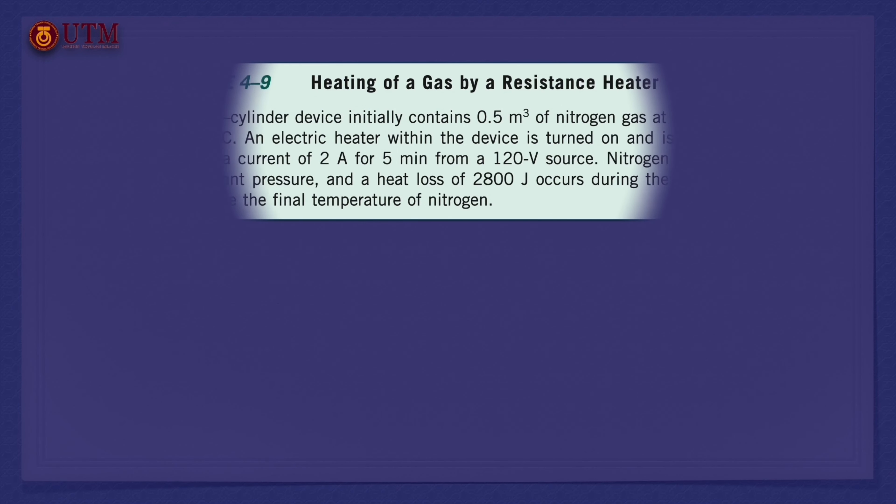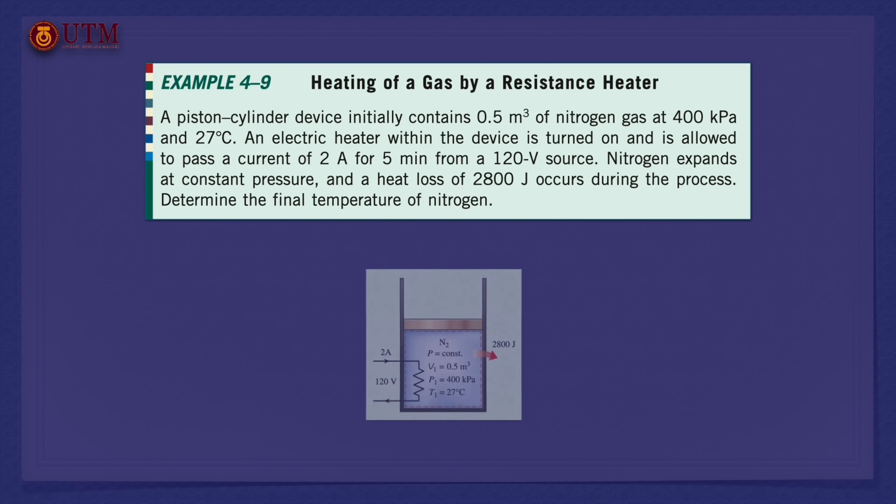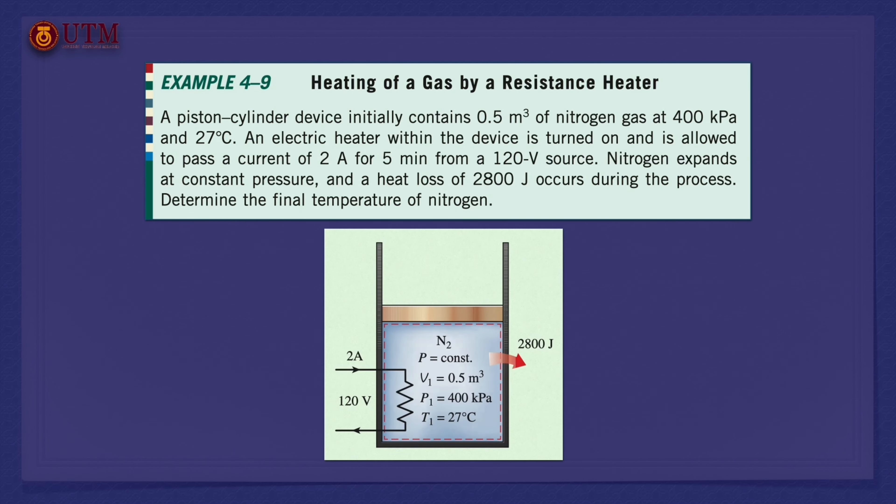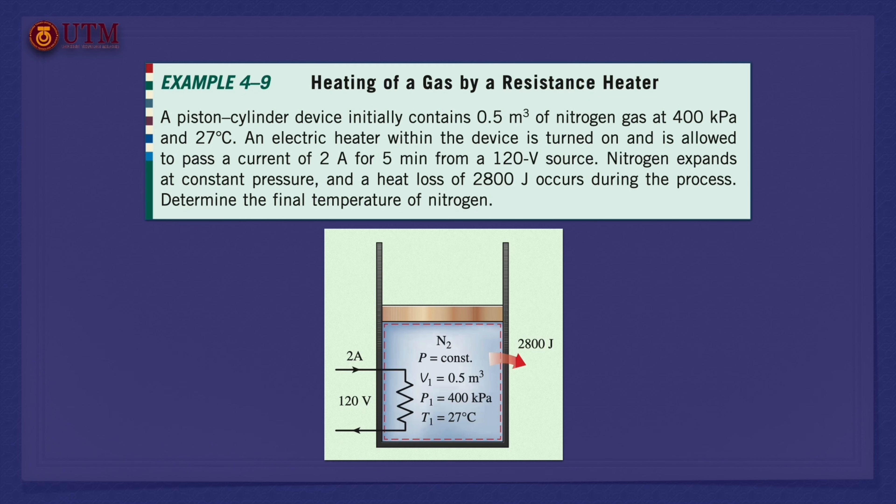Now, let us discuss example 4-9. Nitrogen gas in a piston-cylinder device is heated by an electric resistance heater. Nitrogen expands at constant pressure while some heat is lost. The final temperature of nitrogen is to be determined.